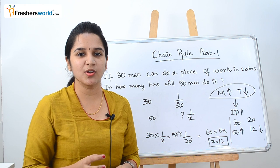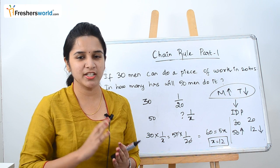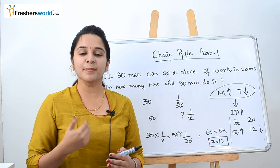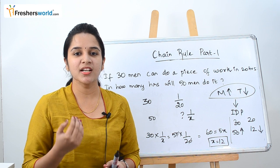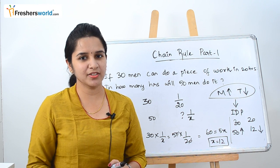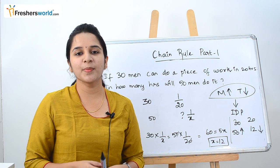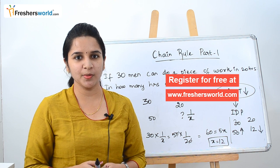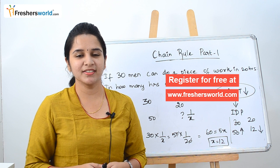In the first part of chain rule, we discussed the basic concepts of direct proportion and indirect proportion and solved two basic sums. In upcoming videos we will discuss tougher problems under chain rule and simple tricks to solve them easily. If you are looking for a job, kindly register at freshersworld.com, like this video, and subscribe to our channel. Thank you.